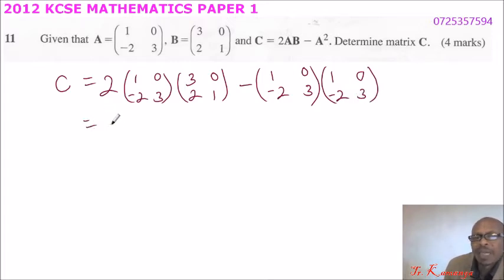So we multiply. You say 2 times: 1 multiplied by 3 is 3, 0 multiplied by 2 is 0, so 3 plus 0 equals 3. 1 times 0 is 0, 0 times 1 is 0, so here we have 0. -2 multiplied by 3 is -6, 3 multiplied by 2 is 6, -6 plus 6 gives 0. -2 times 0 is 0, 3 multiplied by 1 is 3.